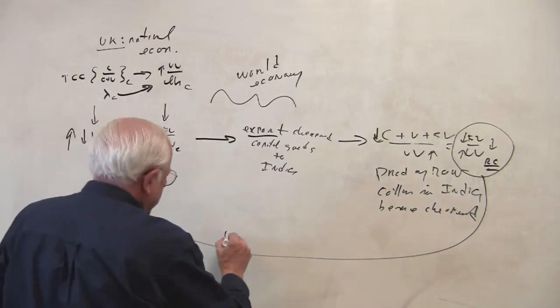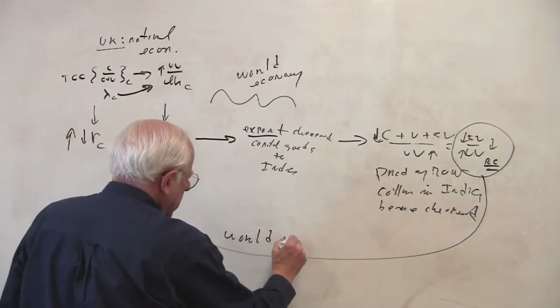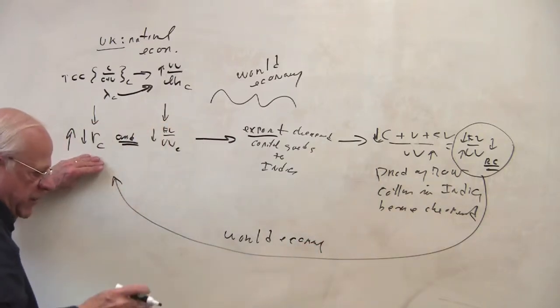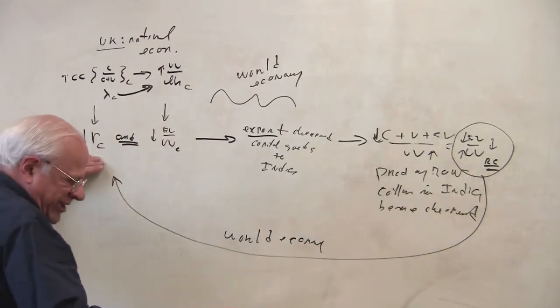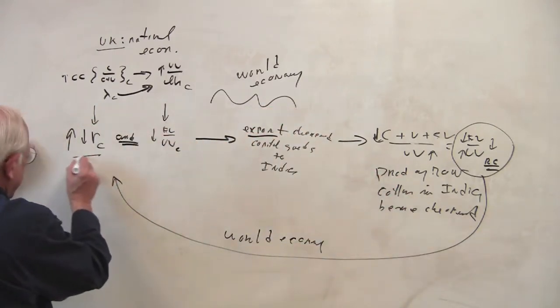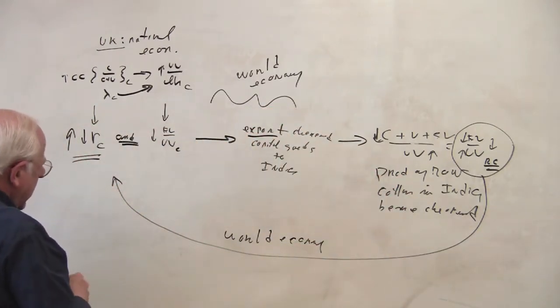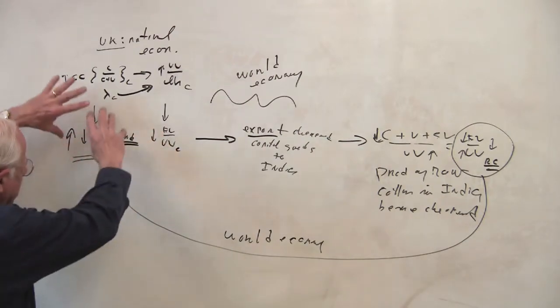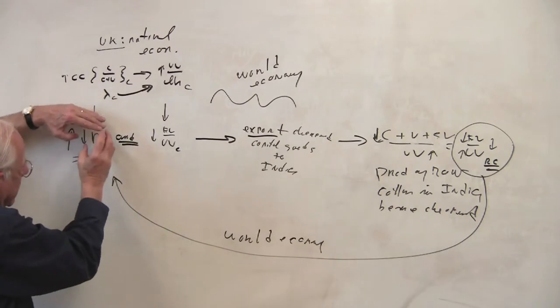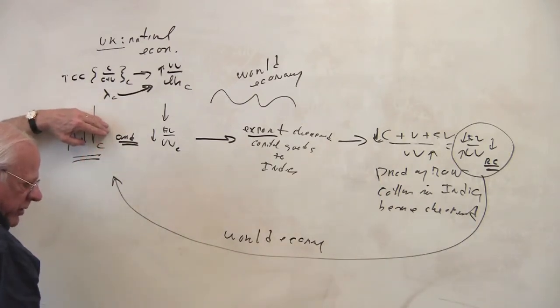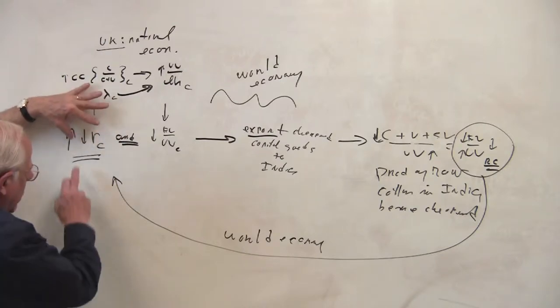And we have then the world economy on this side. Why? Because the British are purchasing the cheaper raw material which enables the profit rate to rise in Britain. And to go back to what we did, okay, this is the machine. We started out with a falling rate of profit in the capital good industry in Britain, okay? So why does it rise?